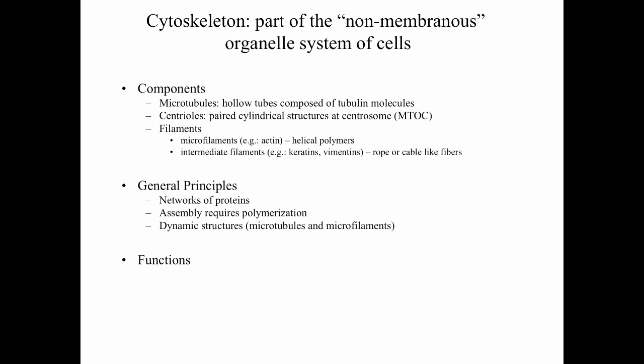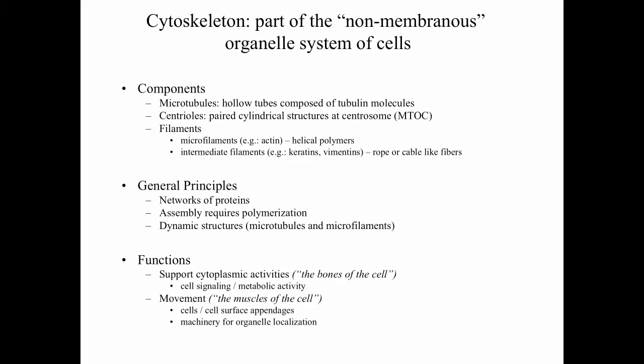Looking at general principles of the cytoskeleton: it consists of networks of proteins, and its assembly requires polymerization. The cytoskeleton largely consists of very dynamic structures, at least from the perspective of microtubules and microfilaments — these are very dynamic structures.